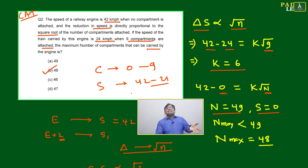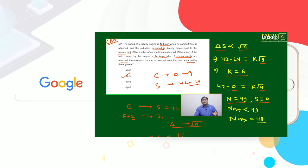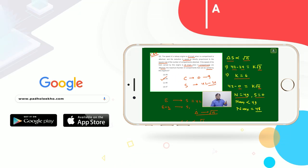If you are not careful, you will mark 49. But at 49, what will happen? The speed will become 0. But the train should move. The question is asking maximum compartments that can be carried by the engine. If the engine will not move, how will it carry? Then just less than 49 - 48 will be the maximum number of compartments that the train can carry, but the speed will vary.